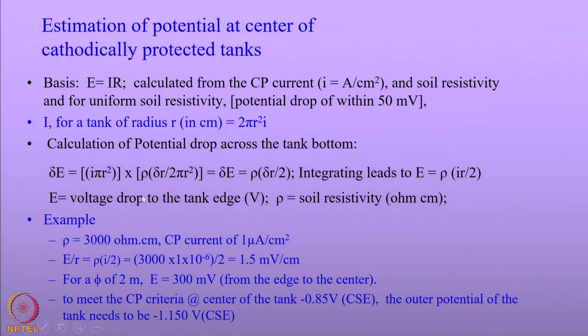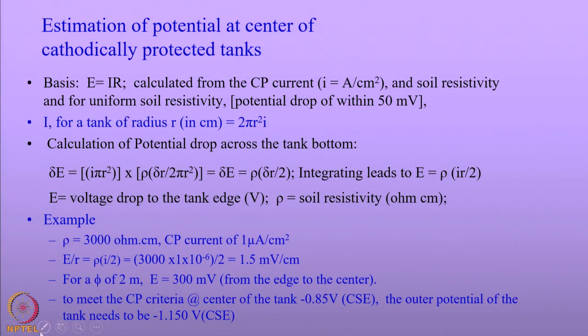For coated tanks, the current can be significantly reduced to 100 to 10 microamperes per meter square. It is also intricate to measure the potential of the tank with respect to soil, especially at the center of the tank where the reference electrode cannot be accessed. The only way it can be done is by using perforated plastic conduits through which reference electrodes are sent. However, it is also possible to estimate the potential of the structure with respect to soil at the center of a cathodically protected tank, and that is done by using a simple equation based on Ohm's law: E = IR.